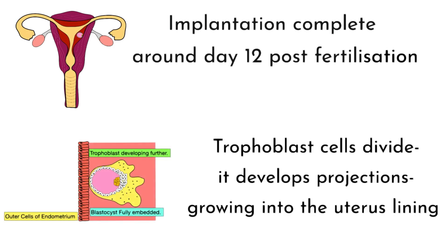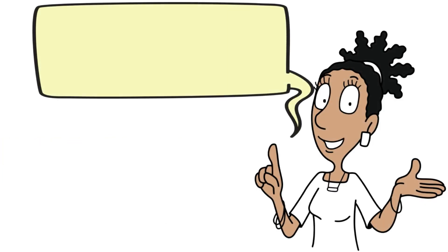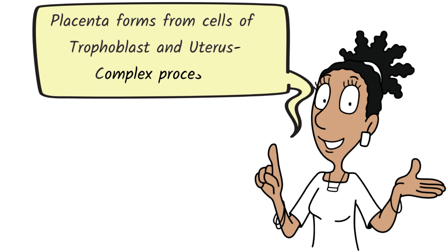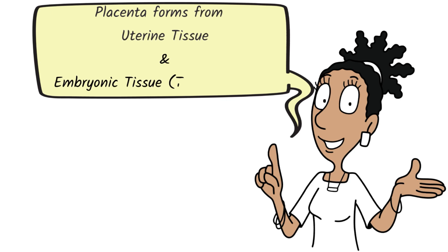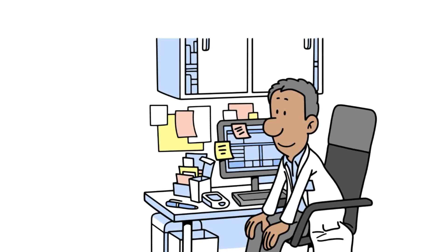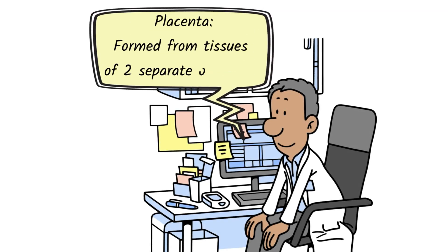The trophoblast cells continue to divide and differentiate, developing projections growing deep into the uterus lining. In a complex process, the placenta forms from cells of the trophoblast and those of the uterus. On the syllabus, we state that the placenta forms from uterine and embryonic tissue. The placenta is considered particularly special because it is formed from the tissues of two separate organisms — the mother and the baby.